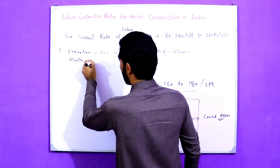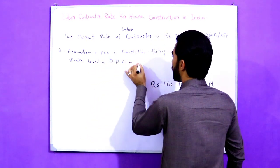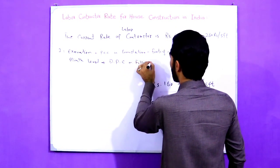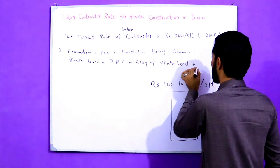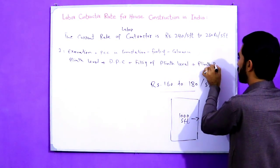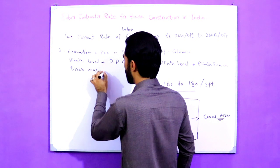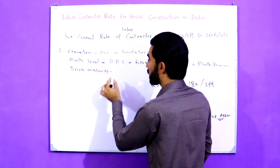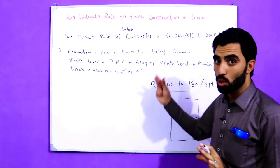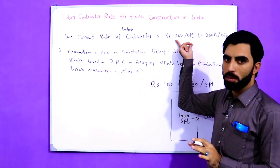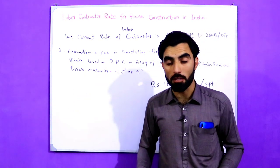The work also includes plinth level, DPC at plinth level, filling of plinth level, plinth beam, and brick masonry — whether it is 4.5 inch or 9 inch. Both options are available at the same contractor rate.